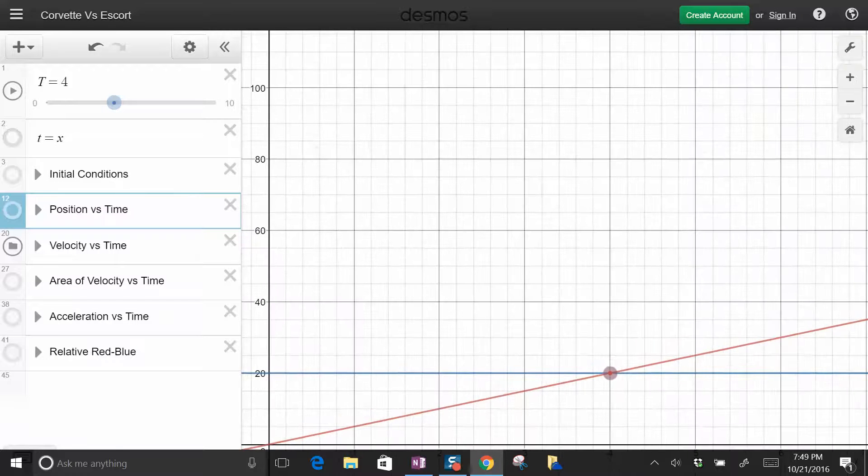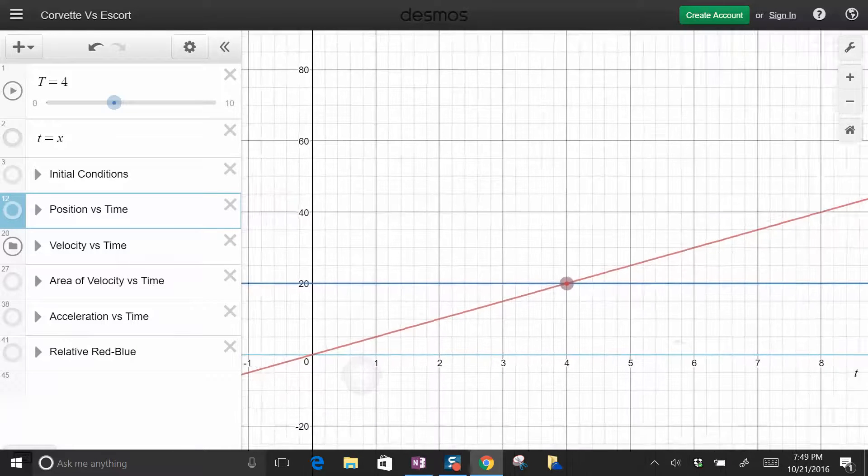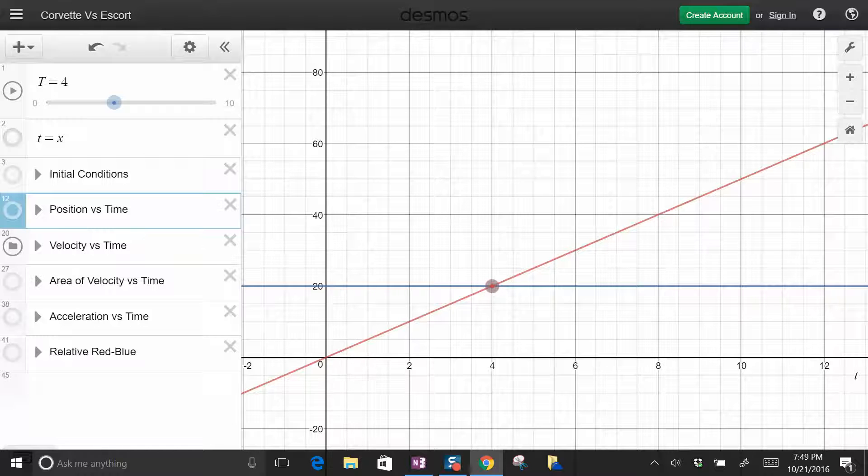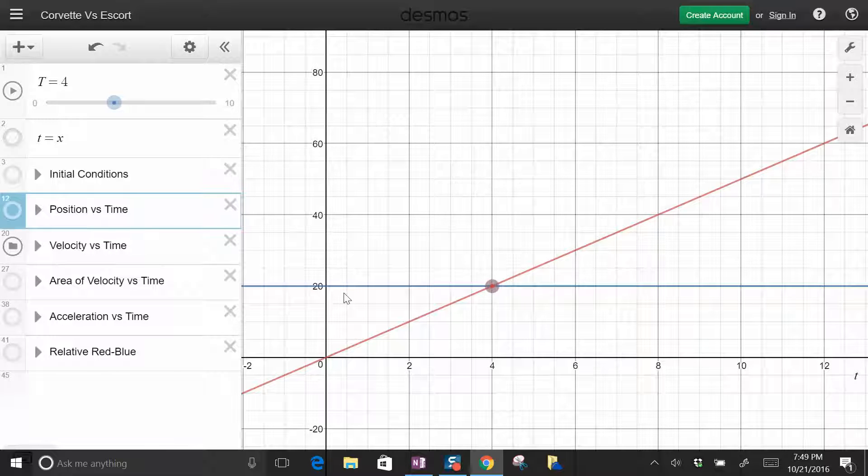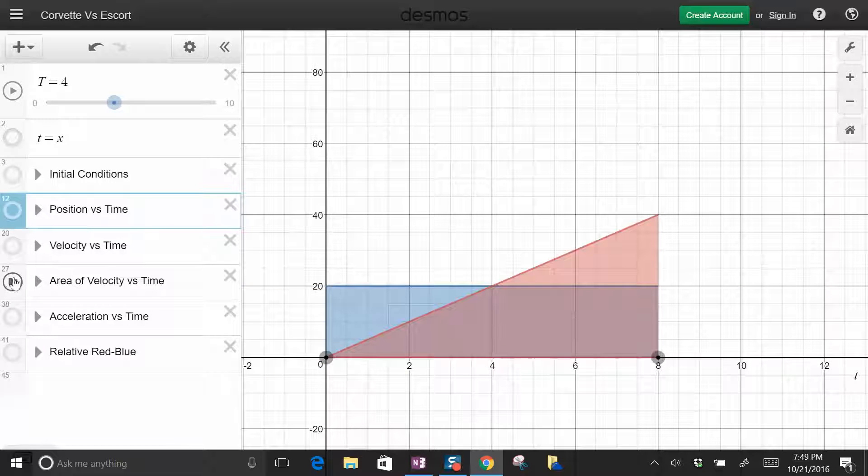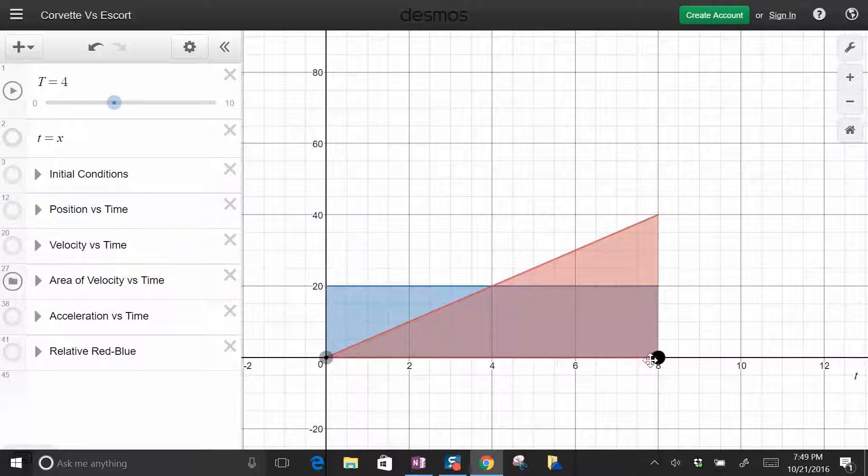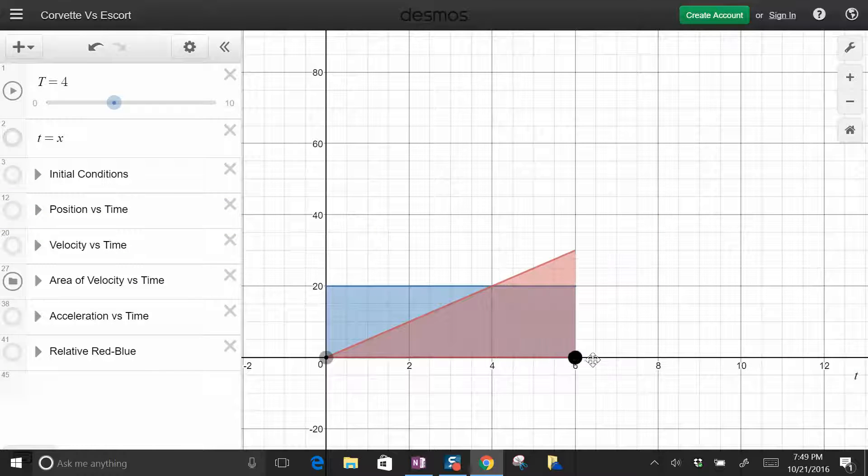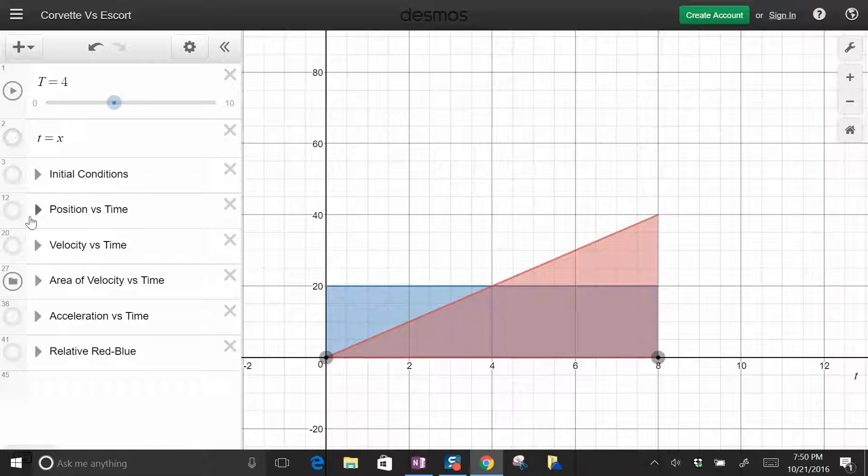Now one of the things you learn in class is that you can get displacement from a velocity time graph. And the way you do that is from getting the area. So, when it catches at eight seconds right here, this blue rectangle is going to equal this red triangle at that point. And to help us show that, I have something called area velocity versus time graph. So we can see that. In fact, we can do this, move this, and it will highlight it.